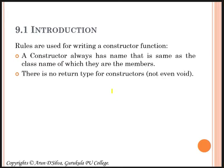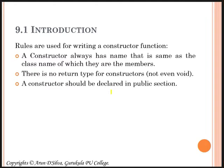Let me give you some of the rules used for writing a constructor function. The first rule: a constructor always has a name that is the same as the class name of which they are members. The second rule: there is no return type for constructors — not even void. We are not using void as a return type specifier for the constructor. And a constructor should be declared in the public section only.